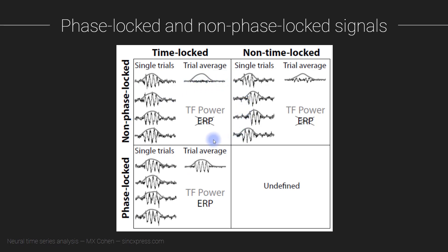This is another figure I showed in that earlier video, just to remind you: we consider phase-locked activity to be survivable through time-domain trial averaging — that is, the event-related potential. If it's non-phase-locked or partially phase-locked, it's not going to survive time-domain averaging and won't be present in the ERP. But you will be able to recover that activity, assuming it has some rhythmicity, using time-frequency analysis.